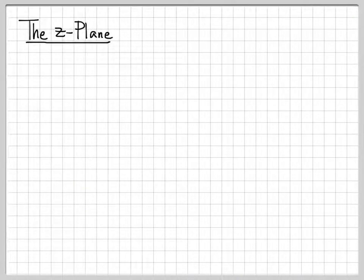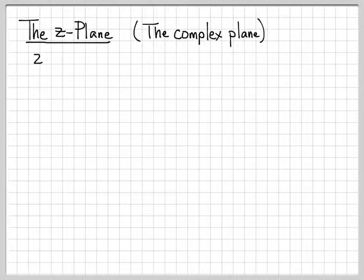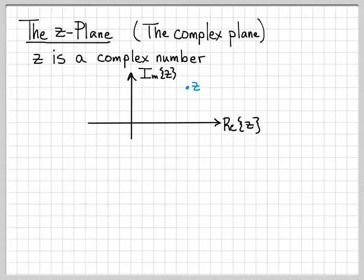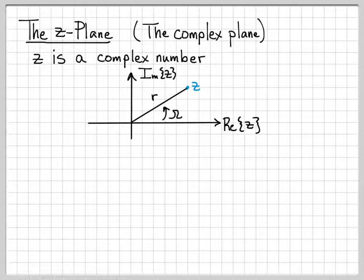Let's talk about the Z-plane, which is just the complex plane. Remember, Z is simply a complex number. When we deal with complex numbers and have to plot them, we plot them against the real part and the imaginary part. So some arbitrary complex number Z can be thought of as a point in a two-dimensional plane. We've been representing Z in polar format: it is some distance R from the origin, and at some angle omega with respect to the real axis. So we write Z equals R e to the j omega.